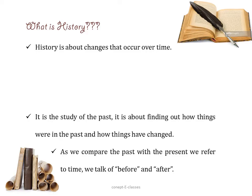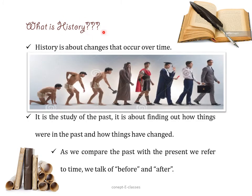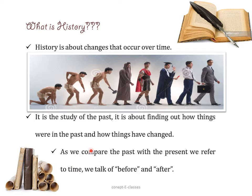First, let's see what history is. History is about the changes that occur over time. For example, if we consider the progression of a man, we can understand how humans have evolved over a period of time. So history is a study of the past — it is about finding how things were in the past and how things have changed. As we compare the past with the present, we refer to time; we talk of before and after.